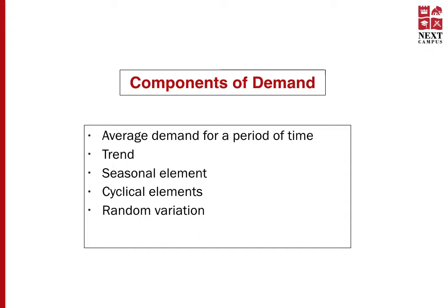The first component is average demand for a period of time. This is the most common component used in demand management. You simply take the average demand of a product within a specific historical time — for example, average monthly demand of a product in the previous year. You take the annual demand figure divided by 12 to get the average demand figure, which is then used to forecast demand for future months.